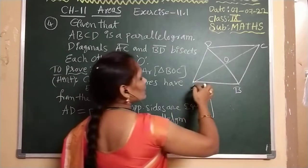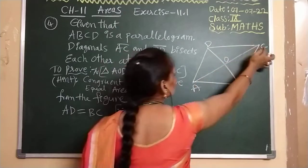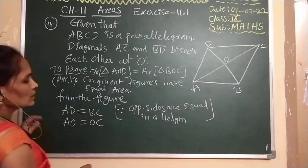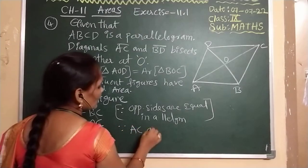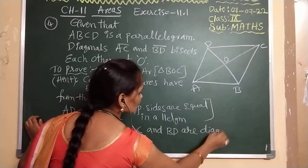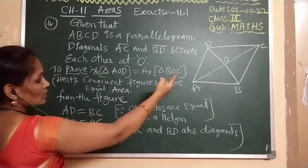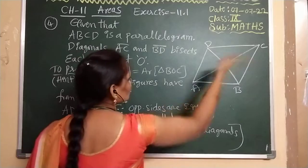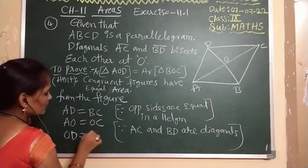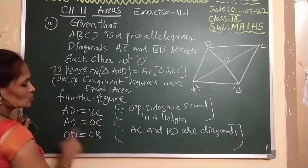Next, since AC and BD bisect each other at O, we have AO equal to OC, and OD equal to OB. So the diagonals are bisected at point O. Therefore AO equals OC, and OD equals OB.